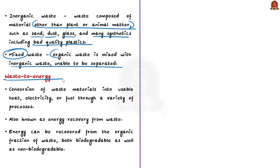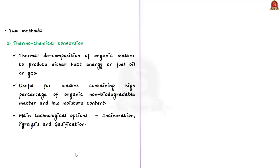What is waste to energy? The conversion of waste materials into usable heat, electricity or fuel through a variety of processes refers to waste to energy. It is also known as energy recovery from waste. Energy can be recovered from the organic fraction of the waste, both biodegradable as well as non-biodegradable. The energy can be recovered basically through two methods. One is thermochemical conversion. This process entails thermal decomposition of organic matter to produce either heat energy or fuel oil or gas. Thermochemical conversion processes are useful for wastes containing high percentage of organic, non-biodegradable matter and also with low moisture content. The main technological option under this category includes incineration, pyrolysis and gasification.